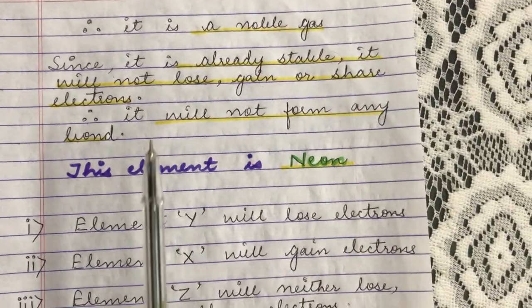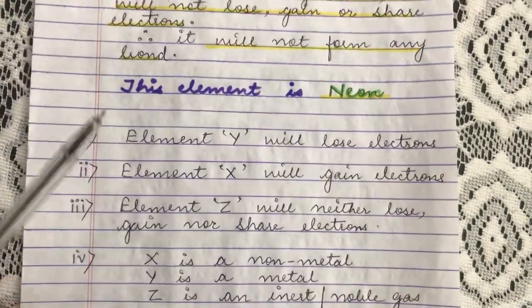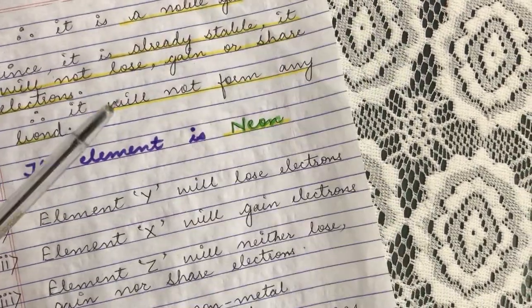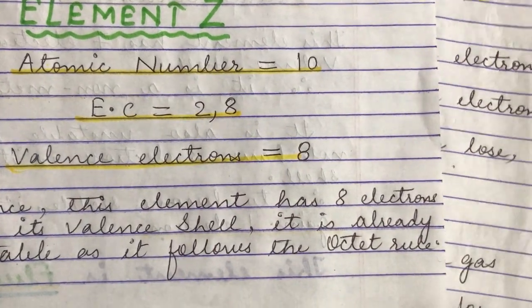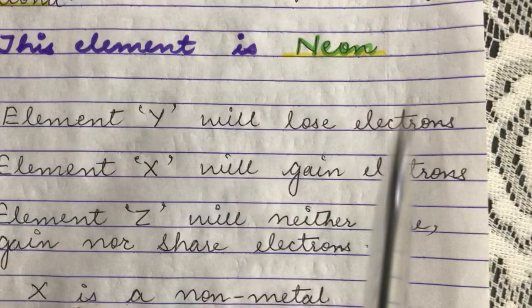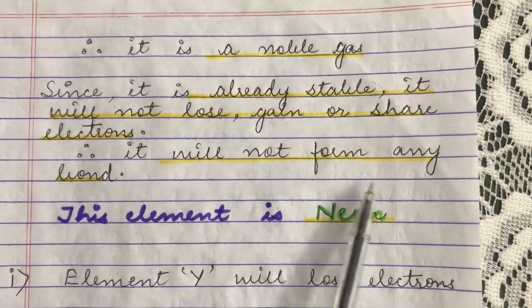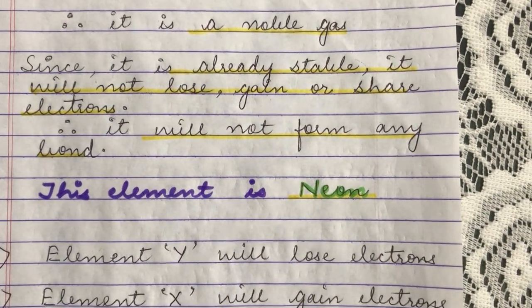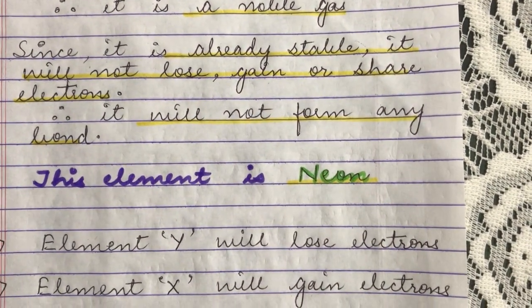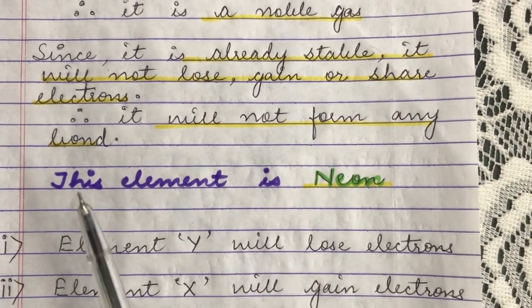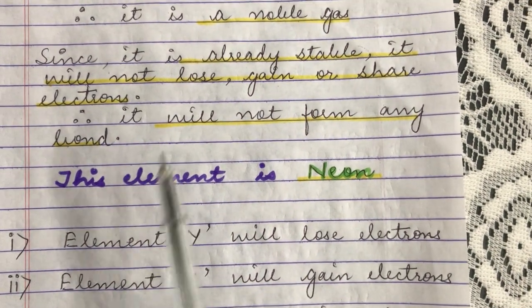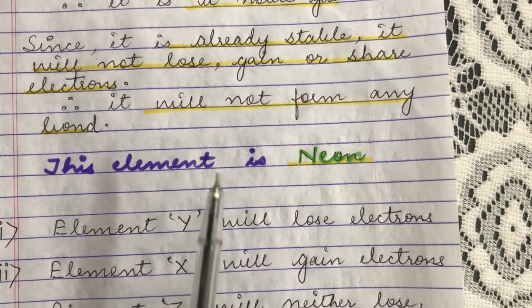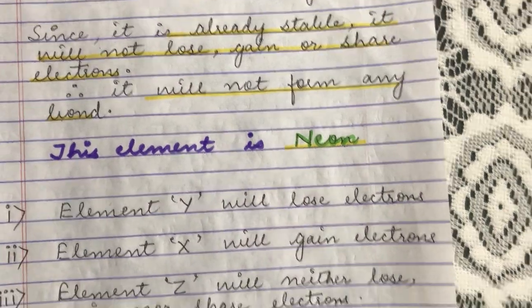Element Z is already stable — it has 8 electrons in the outer shell and is not required to become stable. So it will not lose, gain or share electrons. In turn, since it does not want to lose, gain or share, it is not going to form any sort of bond, since any element bonds only in order to become stable. Since it is the 10th element in the periodic table, this element is neon.